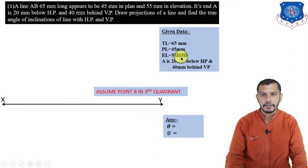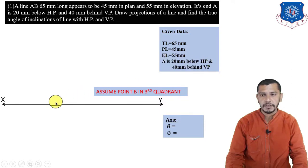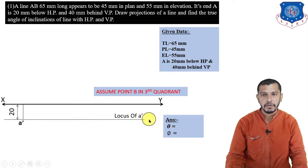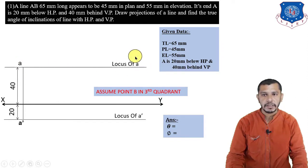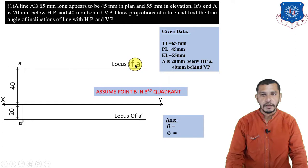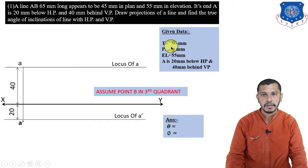After drawing the XY reference line, draw the plan and elevation of point A, since the locus of A is given. A is 20mm below HP, so 20mm below the XY reference line gives the elevation of point A — this is the locus of A-dash. 40mm behind VP means 40mm above the XY reference line gives the plan of point A. Draw the locus of A from point A.